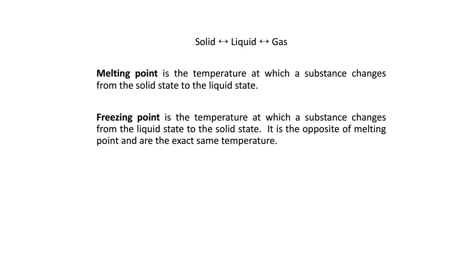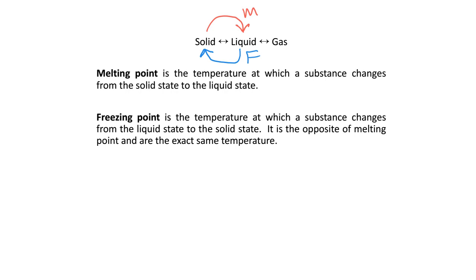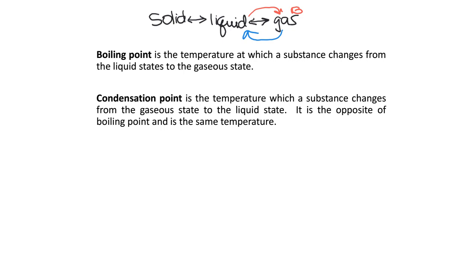The melting point is the temperature at which a substance changes from solid to liquid. The freezing point is the opposite — it is the same temperature but going the other direction. The boiling point is the temperature at which a substance changes from the liquid to the gaseous state. The condensation point is the temperature at which a substance changes from the gaseous state to the liquid state — it is the opposite of the boiling point.